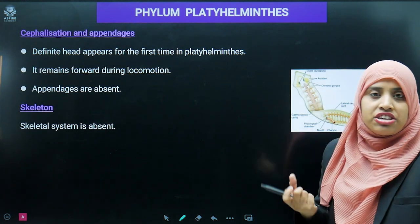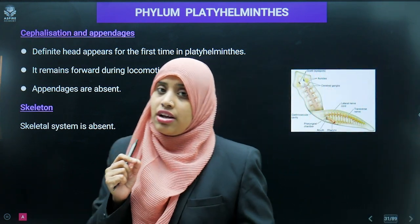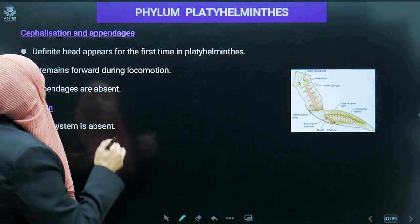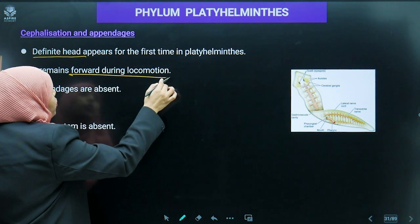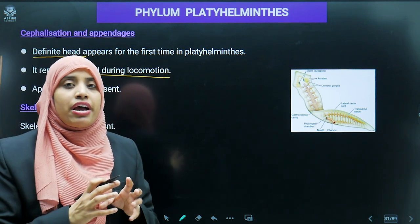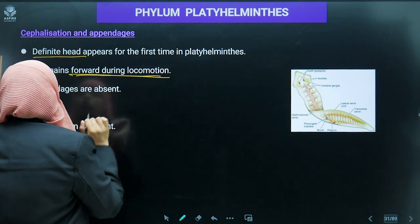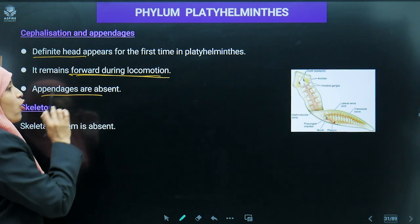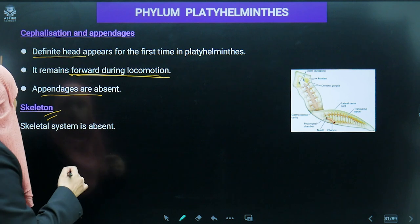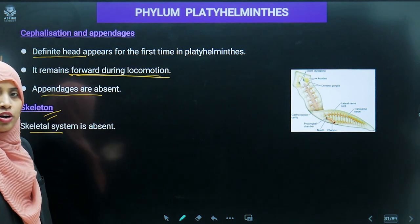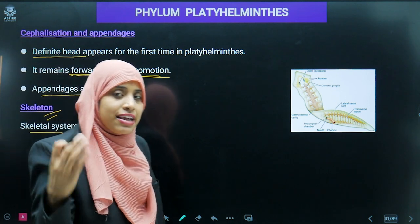Regarding cephalization: a definite head appears for the first time in this phylum, and it remains forward during locomotion. Appendages such as hands and legs are absent. Regarding the skeleton system: there is neither endoskeleton nor exoskeleton — simply no skeleton at all.